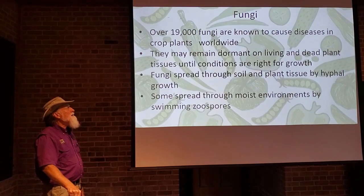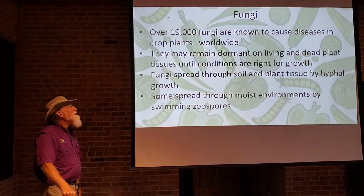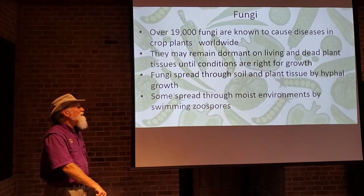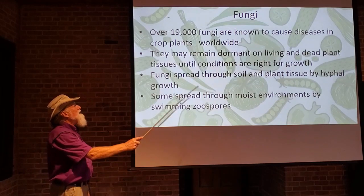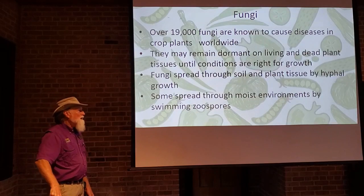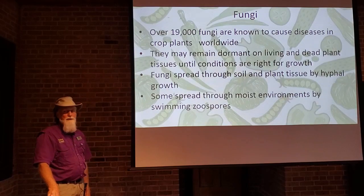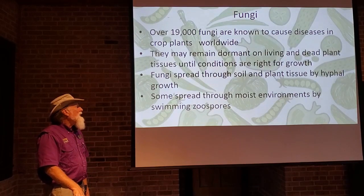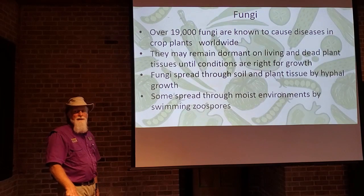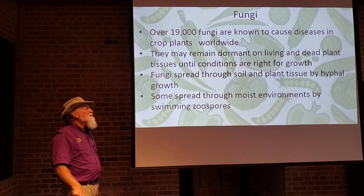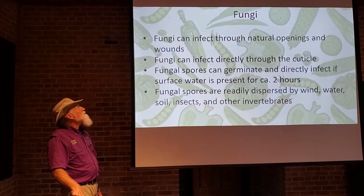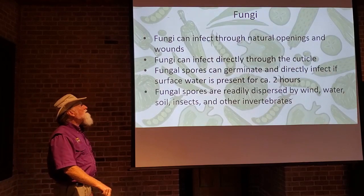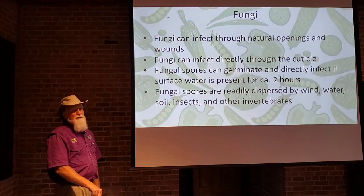There are over 19,000 fungi known to cause plant diseases worldwide. Fungi can remain dormant on living or dead plant tissue and wait for the right conditions to grow and infect. They spread through the soil and through plant tissue by hyphal growth; in moist environments, some fungi have swimming zoospores that swim from one area to another, moving from an infected plant to an uninfected one. They infect through natural openings and wounds like bacteria, but fungi can also directly infect right through the cuticle of the plant.